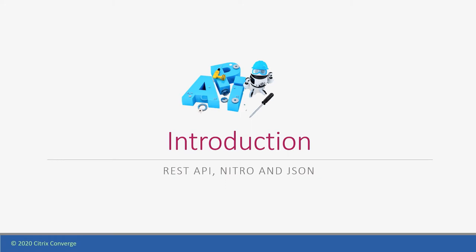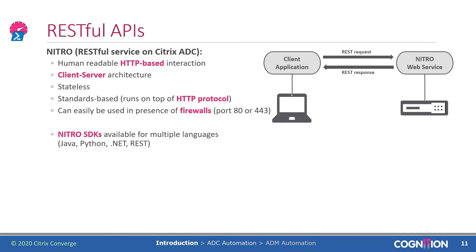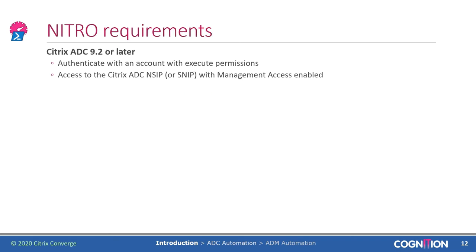Let's dive into REST APIs, Nitro, and JSON. When I talk about Nitro on a Citrix ADC, I'm talking about the RESTful service. REST is based on a client-server architecture using HTTP calls, which allows it to be easily used even within firewalled environments, because all communications run through either port 80 or port 443 for secure communications. The ADC also provides different Nitro SDKs for different programming languages. To use Nitro you need a Citrix ADC appliance version 9.2 or later, and an account with execute permissions to authenticate yourself against the ADC.